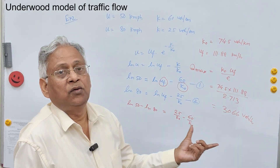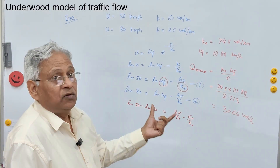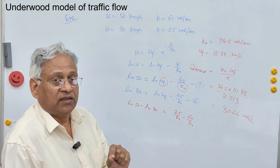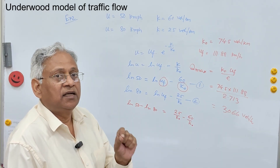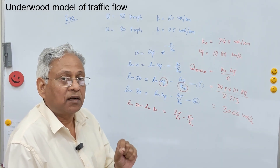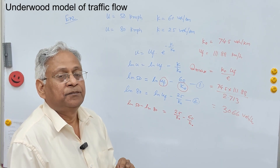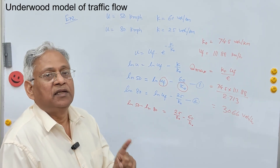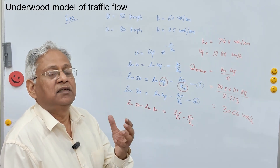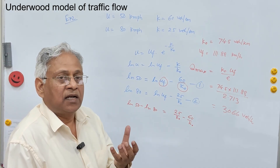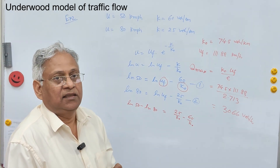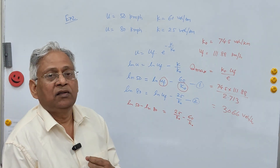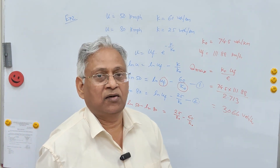So that is how you can use the Underwood model. The Underwood model provides a better fit than Green Shield and Greenberg models to field data. The only weakness is that it does not predict correct speed at very high densities. Thank you very much for watching this video — if you have any questions, you can write in the comment box.